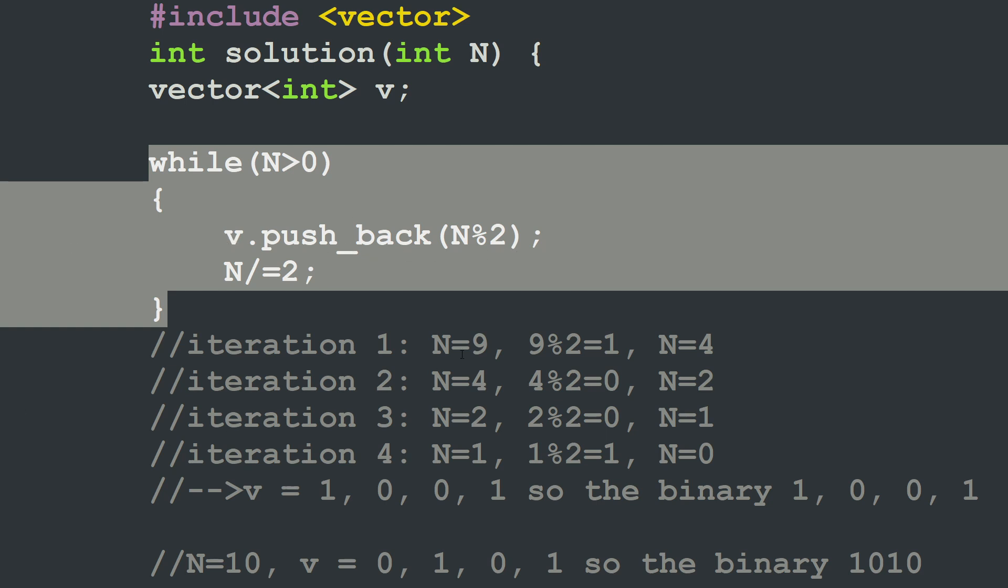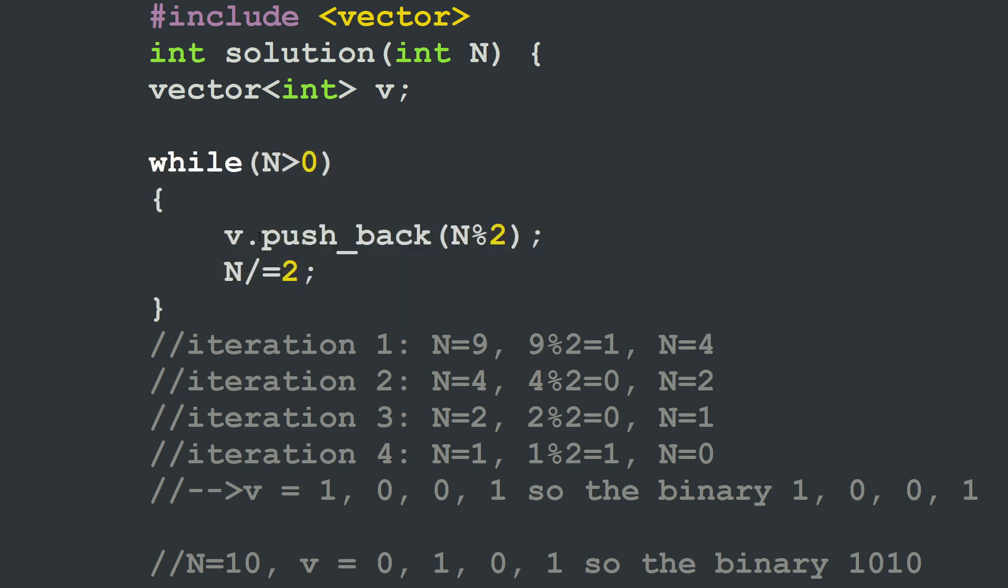For example, if n is equal to 9, the first line here will push into the vector the value of 9 modulus 2, which is equal to 1. And after that, we will divide n by 2. In this case, n will become equal to 4. In the second iteration, we have n is equal to 4. Then 4 modulus 2 is equal to 0. So I will push back the 0 value into my vector after the 1 value. And then n will be equal to 2. At the third iteration, you have 2 modulus 2 is equal to 0.